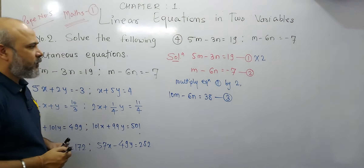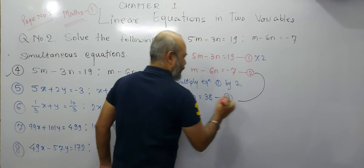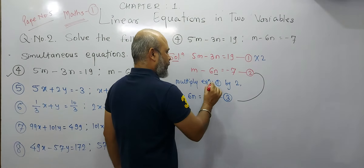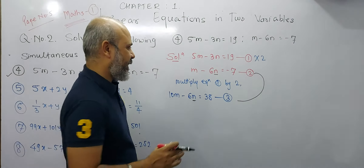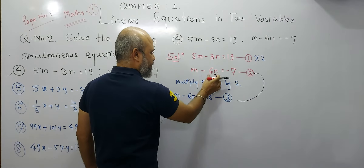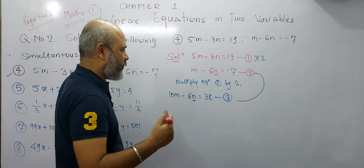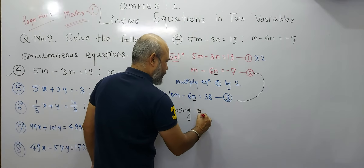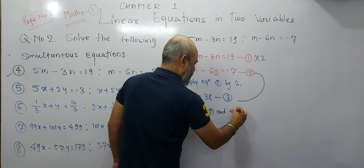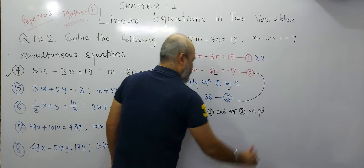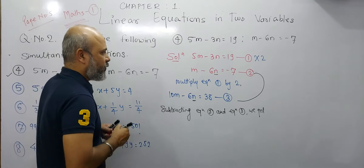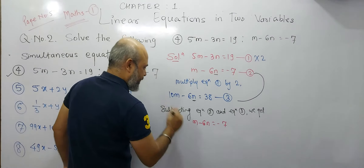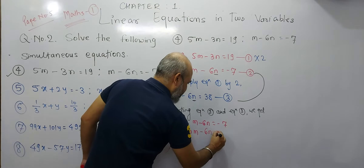Now we will look at equation number 2 and equation 3. When we observe them, we see the coefficient of variable n is now the same in both cases, and the sign is minus in both cases. So the sign is the same, which means we will subtract. Subtracting equation 2 from equation 3, we write equation 2 as m minus 6n equals minus 7, and equation 3 as 10m minus 6n equals 38.